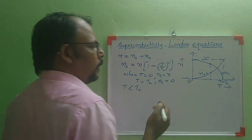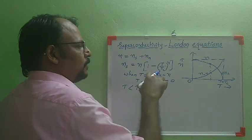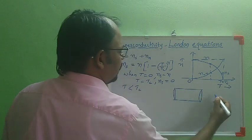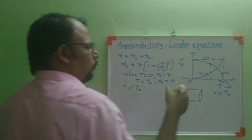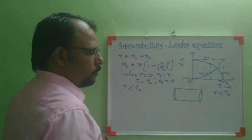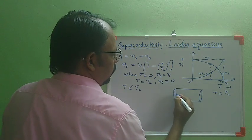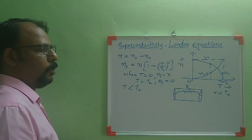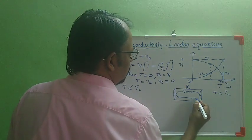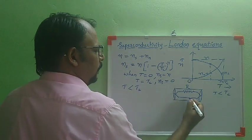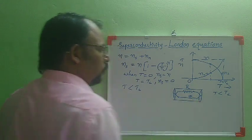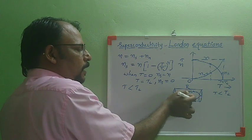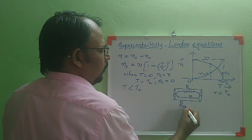Normal electrons undergo scattering which leads to resistance. When a superconductor is kept at a temperature less than Tc, it is in the superconducting state, having both normal electrons and super electrons. When an electric field is applied, normal electrons offer a resistance R, while super electrons have zero resistance. These two paths conduct in parallel. If two conducting paths are connected in parallel — one with zero resistance and another with resistance R — the equivalent resistance is zero. So even though normal electrons are present, the resistive path is short-circuited by the zero-resistance path, and the net resistance is zero.